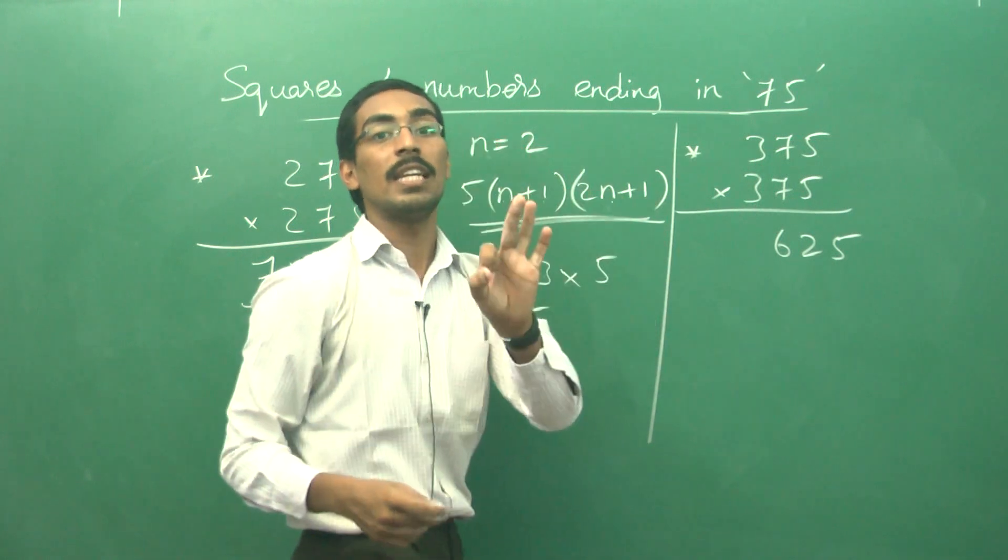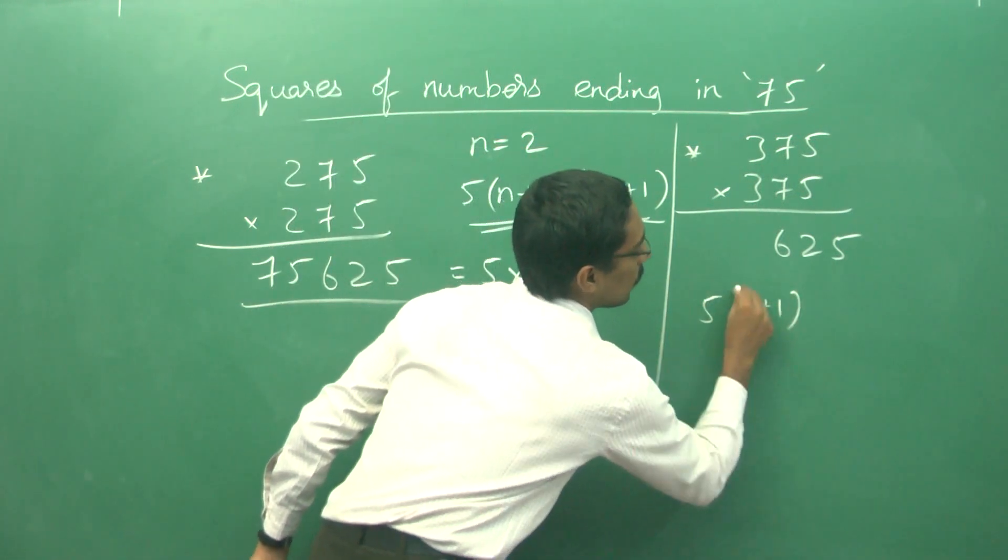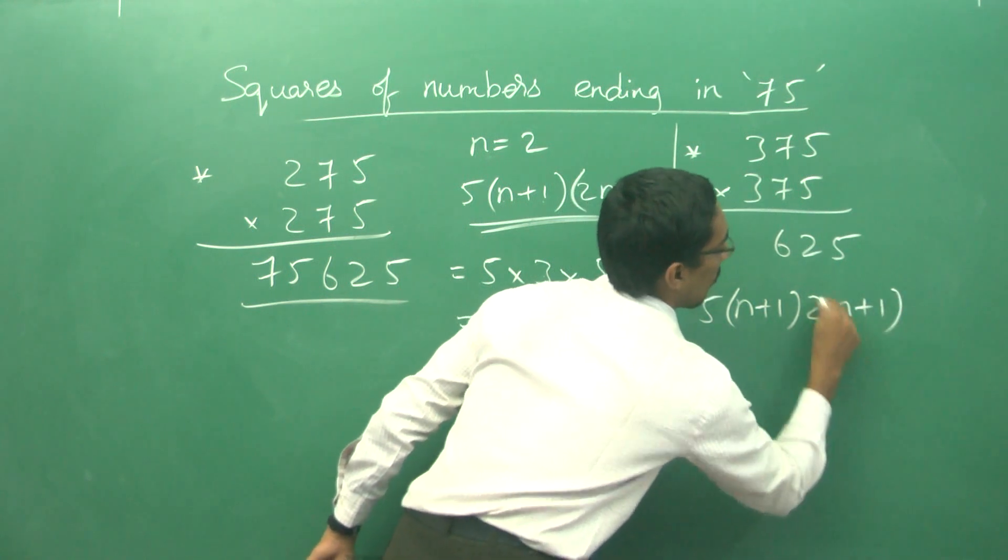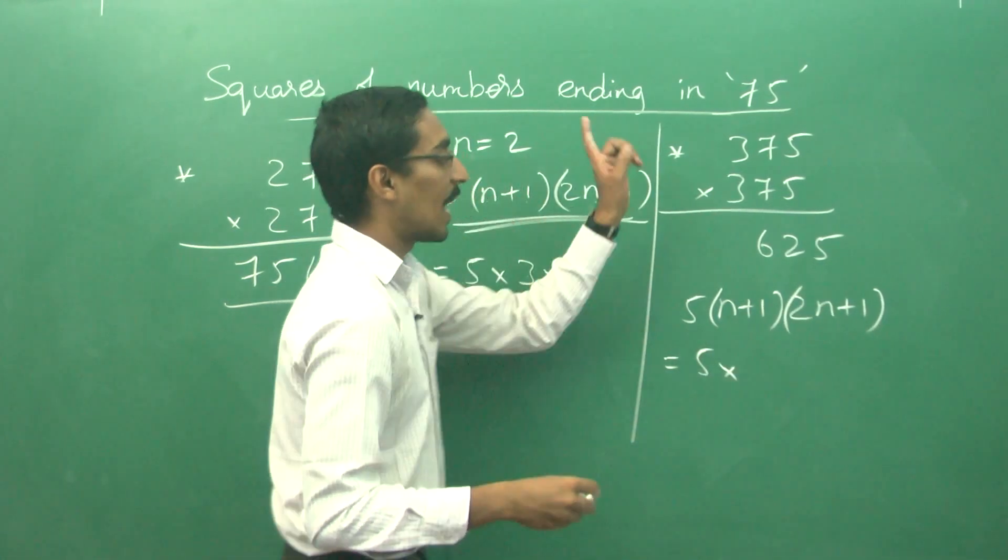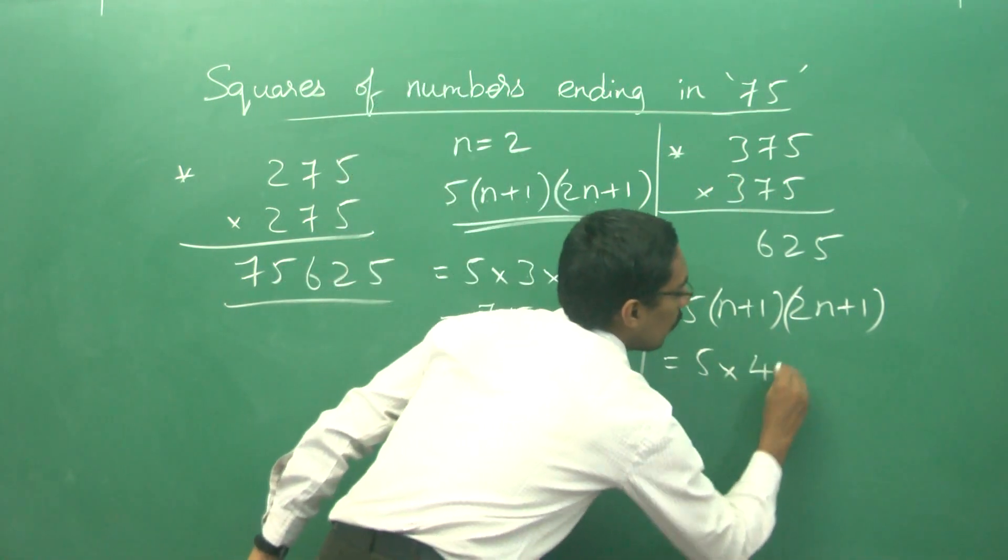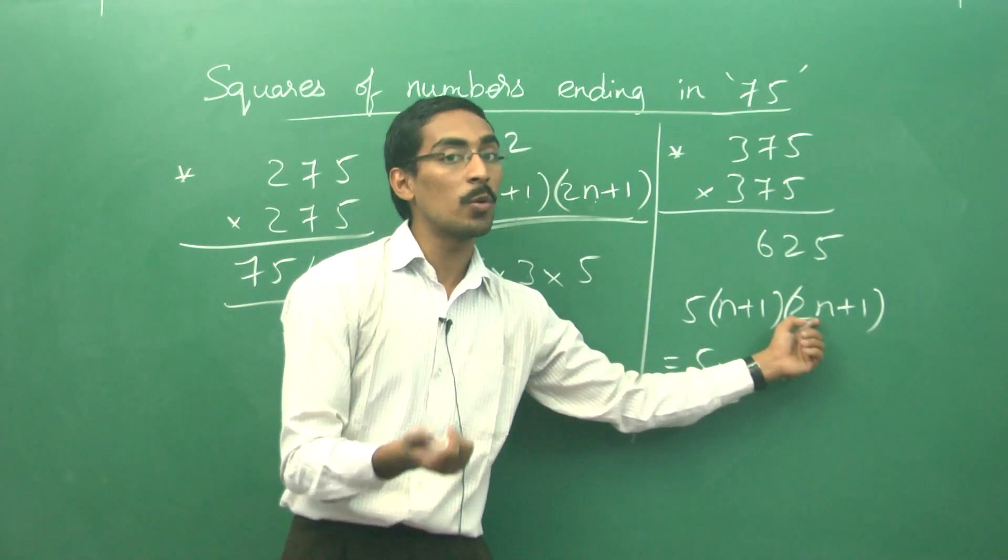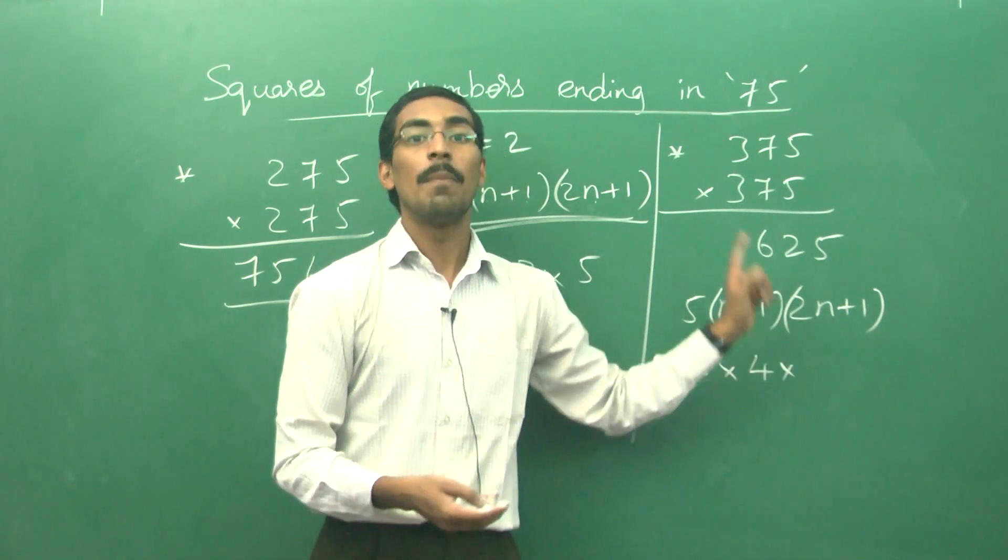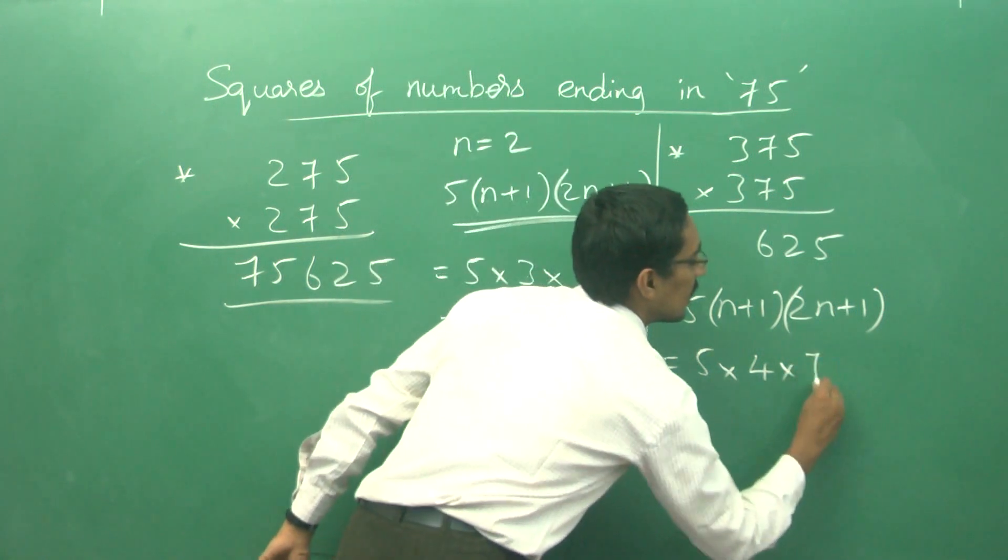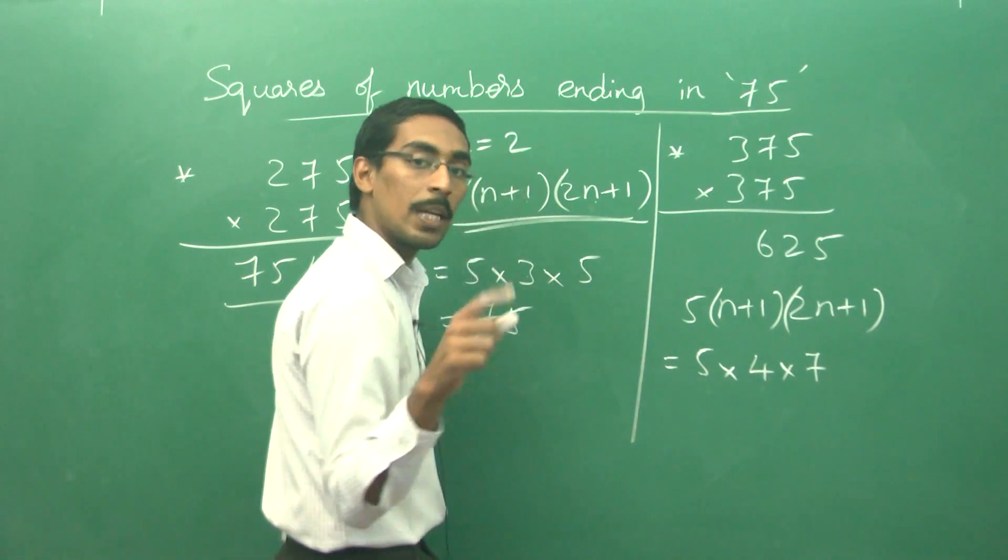Other than that, what is the value of n here? 3. So now apply 5 into (n+1) into (2n+1). This comes to 5 into, if n is 3, n plus 1 is 4, times 2n plus 1. If n is 3, 2n is 6 plus 1 equals 7. So 5 into 4 into 7 is the answer.